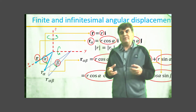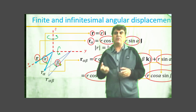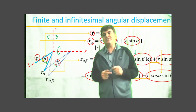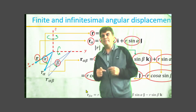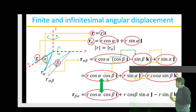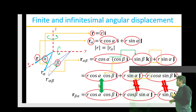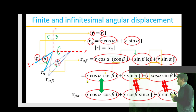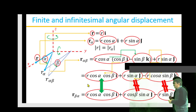Similarly, if we first rotate vector r about the y-axis through finite angular displacement beta and then about the z-axis through finite angular displacement alpha, following the same procedure we can write r_{beta,alpha} in a corresponding form. A term-by-term comparison shows that the x components in both cases agree with each other, whereas the y and z components do not agree. Therefore r_{alpha,beta} ≠ r_{beta,alpha}, meaning the two finite angular displacements do not commute.